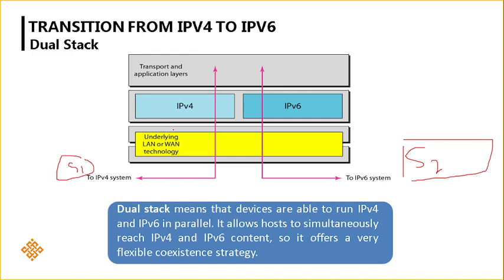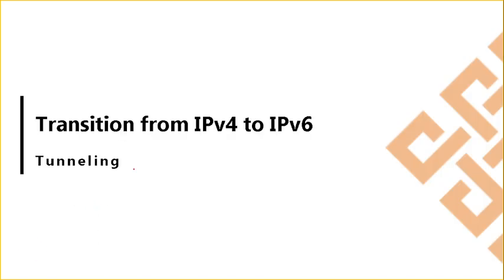It is possible to transfer both IPv4 and IPv6 packets in parallel in both systems — that's the meaning of devices running IPv4 and IPv6 in parallel. Since both nodes are configured with both versions, you can easily transfer packets of either type. The only drawback is that it is somewhat costly or expensive.